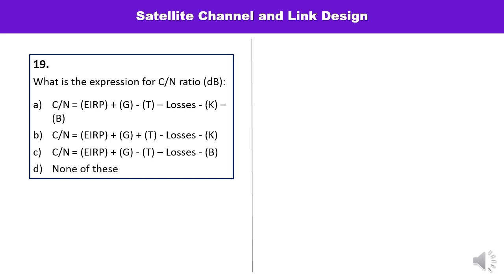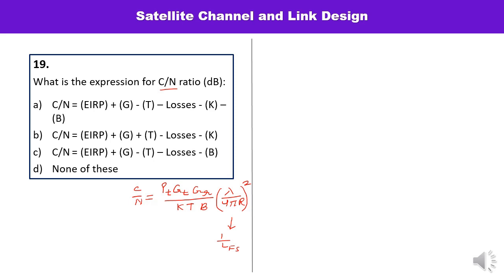Question number 19: what is the expression for C/N ratio? C/N = PT·GT·GR·(λ/4πr)²/KTB. Written in dBs, PT·GT is EIRP, and the free space loss term applies. You can verify that A is the correct option.